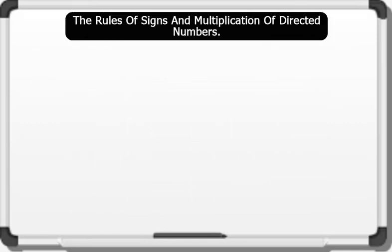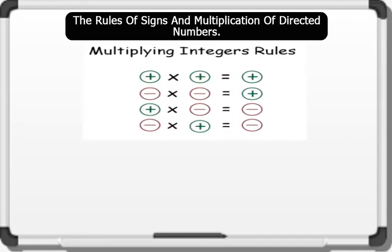The Rules of Signs and Multiplication of Directed Numbers. The picture on the board illustrates the rules for multiplying integers or directed numbers. Where: plus times plus equals plus; minus times minus equals plus; plus times minus equals minus; and minus times plus equals minus. Remember that in some cases the positive signs are invisible.